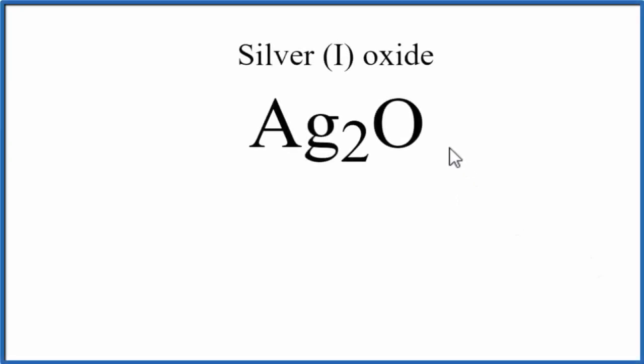In this video, we'll write the Lewis structure for Ag2O, Silver I Oxide. This is also known as Silver Oxide.